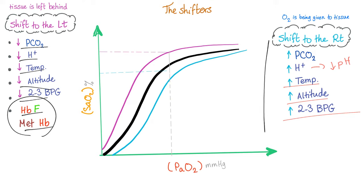In addition to those shifters, we add two things: hemoglobin F and methemoglobin. Hemoglobin F is fetal hemoglobin. Because the baby wants to take all the oxygen from mommy — its lungs are useless while in the womb — it has hemoglobin F. Hemoglobin F shifts the oxygen dissociation curve to the left so that it binds oxygen to itself, decreasing unloading and increasing loading, taking all the oxygen from mommy to survive.